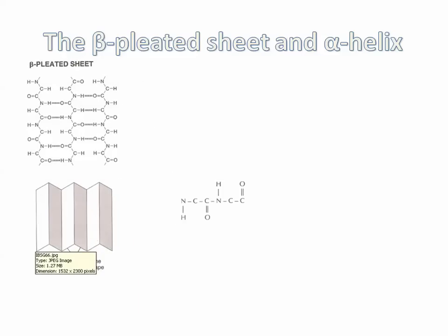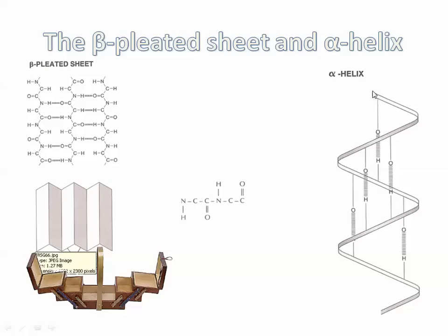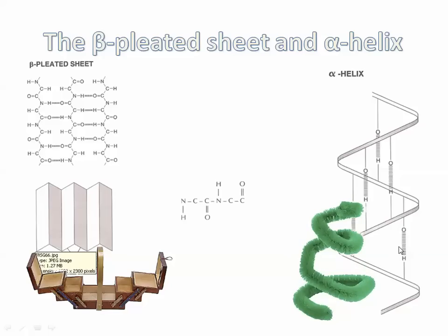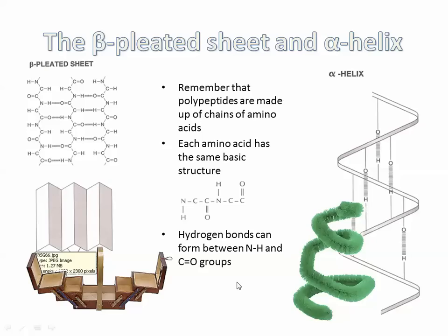Secondary structure involves the alpha helix or the beta-pleated sheet. The alpha helix is a chain of amino acids where O's and H's can form hydrogen bonds with each other — the same type we see between water molecules. So secondary structure is all about alpha helixes and beta-pleated sheets, held together in their spiral or folded structure by hydrogen bonds.